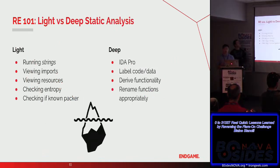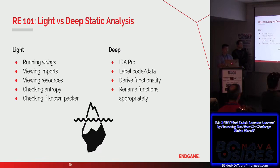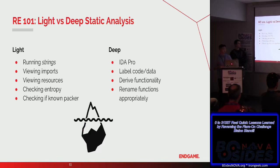We can further group our reversing strategies into light and deep static analysis, and light and deep dynamic analysis. Some examples of light static analysis include running strings, reviewing the imports a binary uses, reviewing its resources, or checking the entropy of the binary to see if it's employing a packer. Examples of deep static analysis include opening the binary in a disassembler like IDA Pro, using the disassembly, labeling functions once you figure out what they do, and defining structs or labeling code and data — anything to help you derive the functionality of the binary.